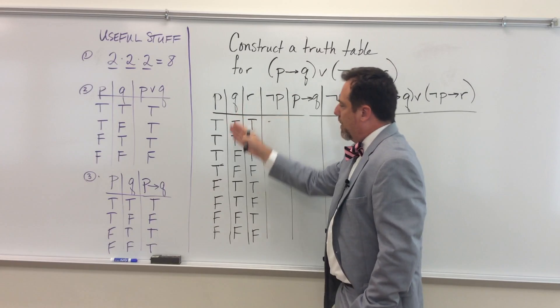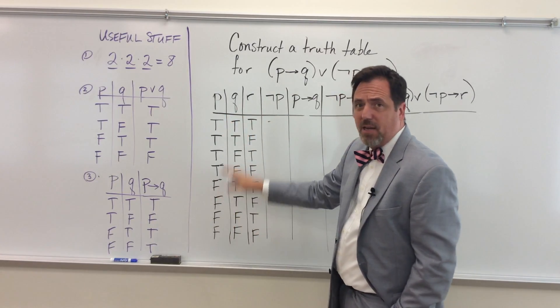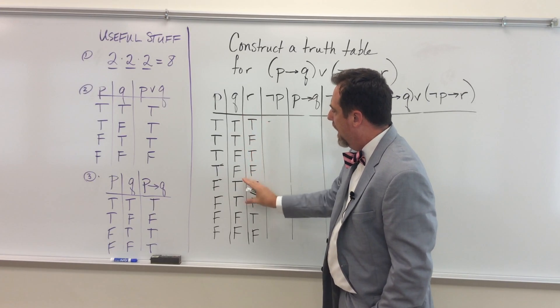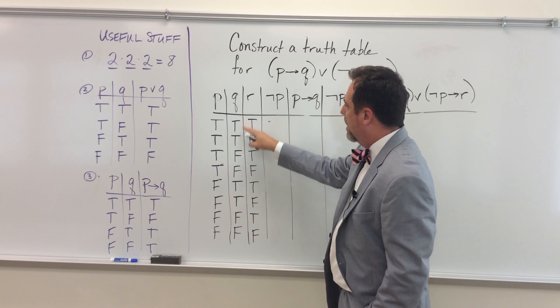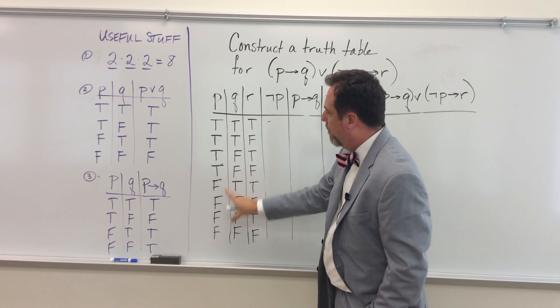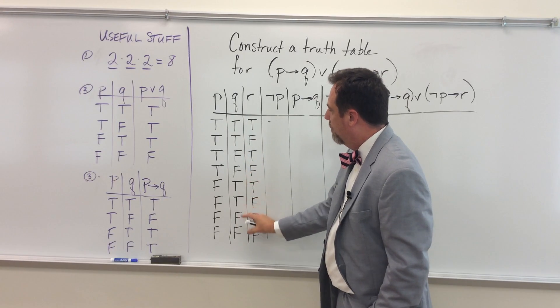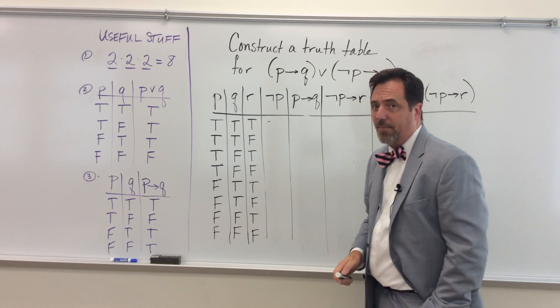So I've laid out my trues and falses in the normal way. I have half true and half false in my first column. I cut that in half again in my second column, and I cut my second column in half. So I have four true, four false, two true, two false, two true, two false, and then a true false, true false all the way down.